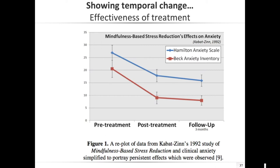When you have lines, people always think of some kind of connection — here it's more like time: pre, post, and follow-up. What you can see nicely is the typical interaction-style plot: two different indices like the Hamilton Anxiety Index and Beck Anxiety Inventory both show the same data pattern, probably no interaction between them. Otherwise they would cross each other. This can be super useful for time series data.